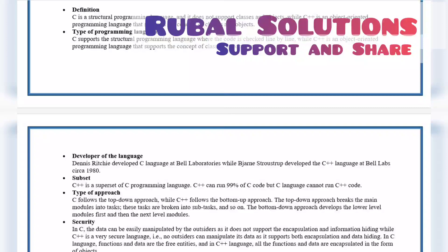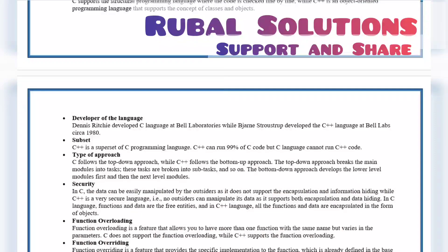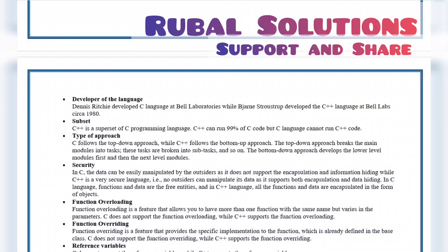Subset. C++ is a superset of C programming language. C++ can run 99% of C code, but C language cannot run C++ code.